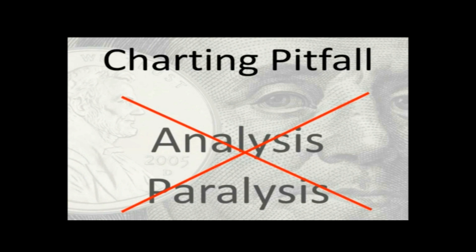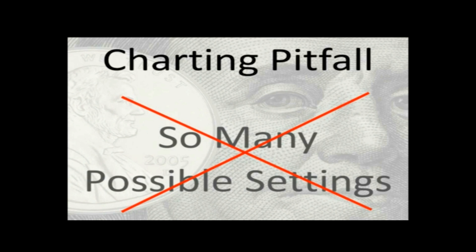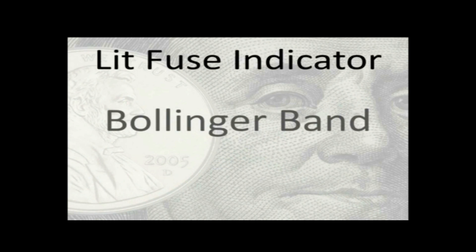That's a simple technical analysis indicator, and there are so many that people can get confused. But what we're going to get into is a little bit more complex than a simple moving average. You don't need to know how they plot or how to draw them, as long as you know how to read them. Since there are so many possible settings, we're going to use just one. Our lit fuse indicator is officially known as a Bollinger Band.